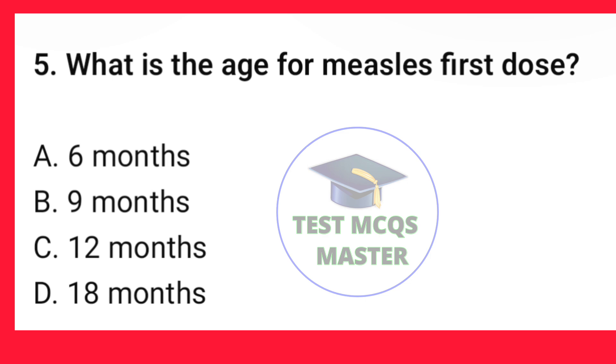Question number 5. What is the age for measles first dose? The correct option is B — nine months.